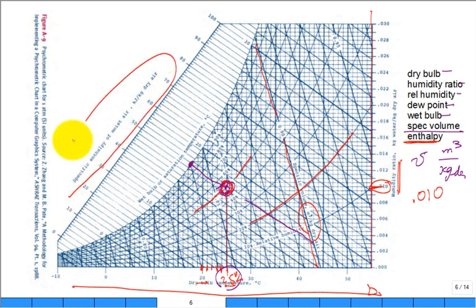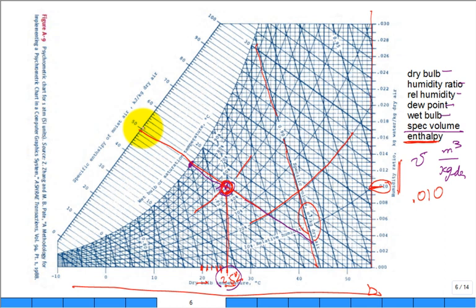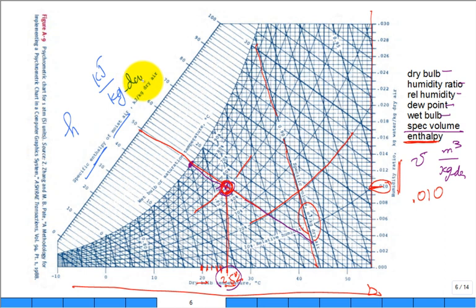The last property is mixture enthalpy. You see it way over here; it's easier to read from that side. If I'm at 25°C and 50% relative humidity and project along the line, it looks like around 49–50 kilojoules of energy per kilogram of dry air. This is the specific enthalpy of the moist air — lowercase h — which includes the energy content of the vapor, but it's in kilojoules per kilogram of dry air.